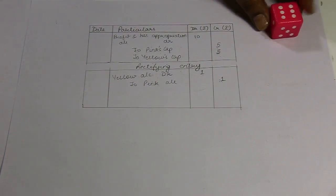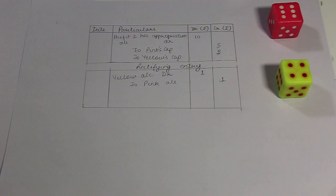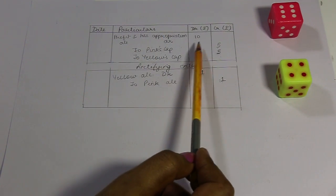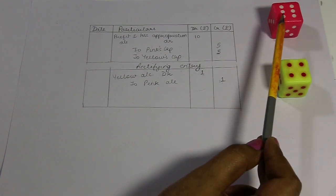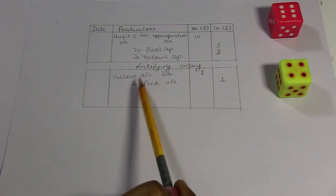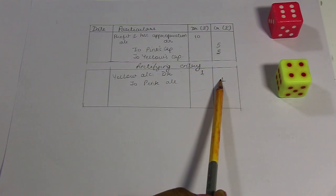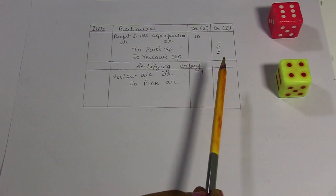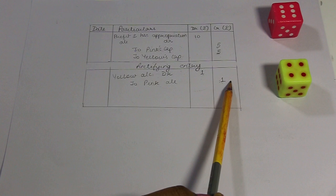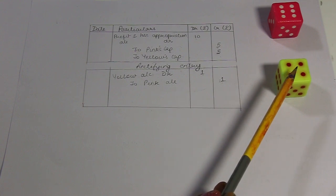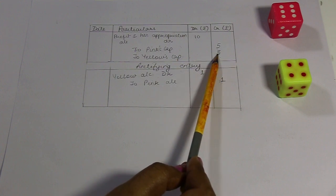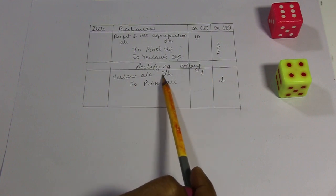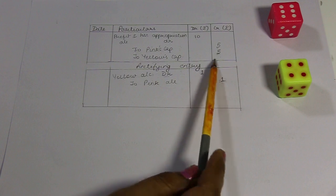I had to give Pink Rs.6 and Yellow Rs.4. The books already show a credit of Rs.5 to Pink. I need to credit Pink with Rs.6, so I will add Rs.1 more credit — making 5 plus 1 equals Rs.6 in Pink's account. For Yellow, I already have Rs.5 credit but need only Rs.4, so I will debit the rectifying entry with Rs.1. Net effect: credit 5 minus debit 1 equals net credit of Rs.4.